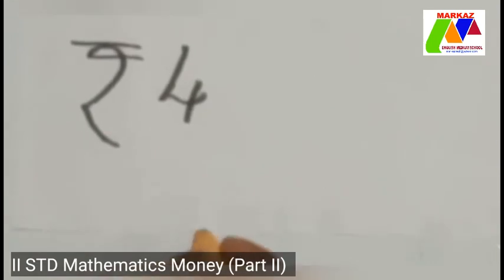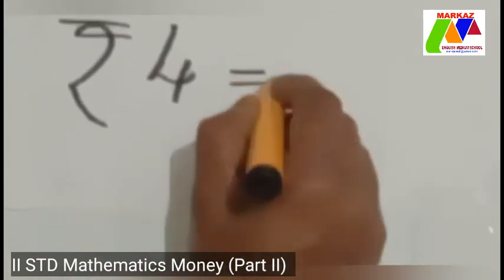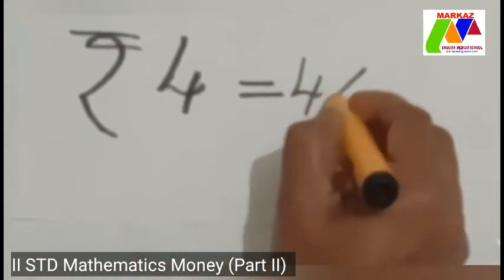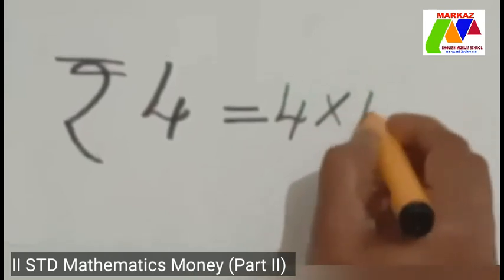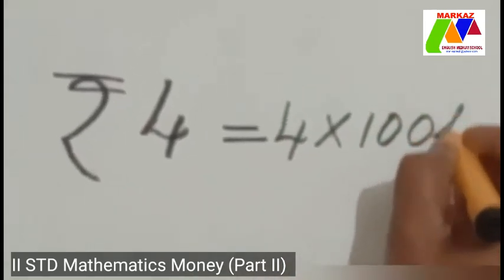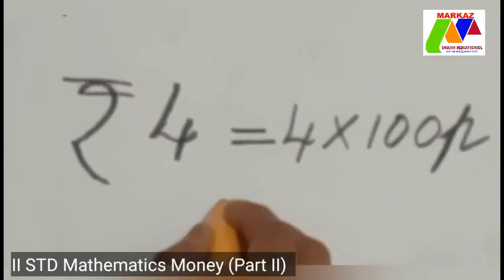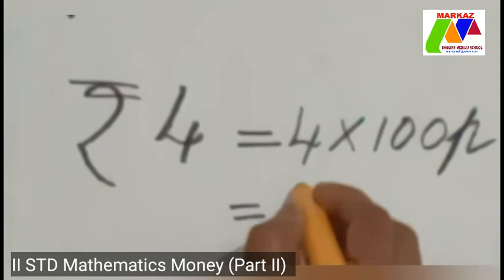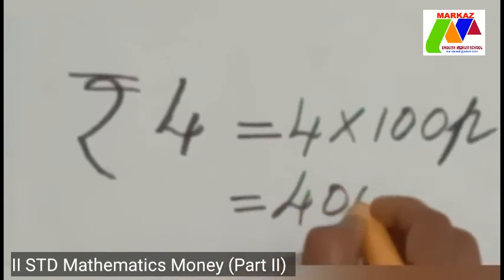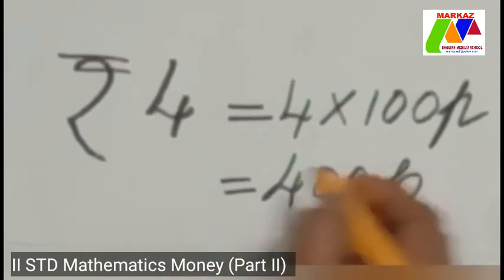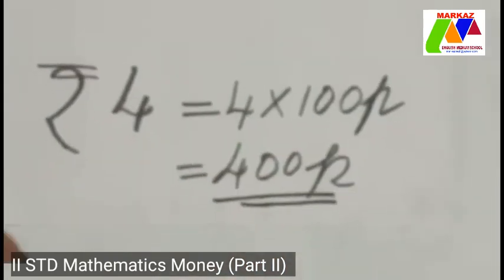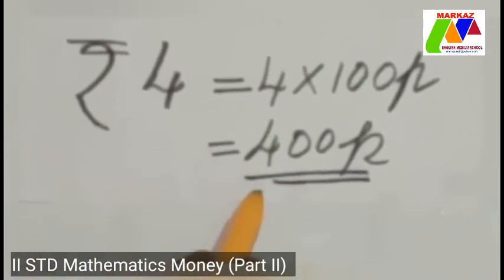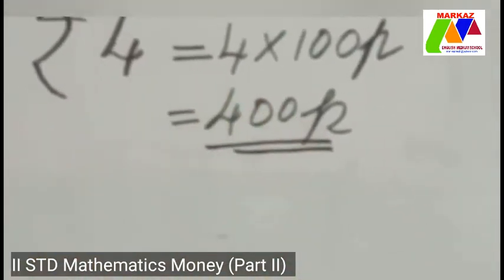Can you tell me how many paise make four rupees? Four rupees is equal to four into hundred paise. So four rupees is equal to four hundred paise.